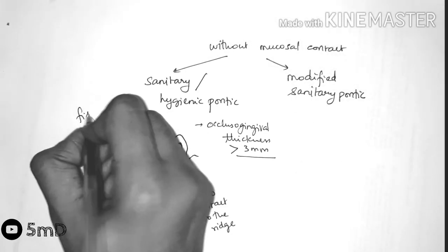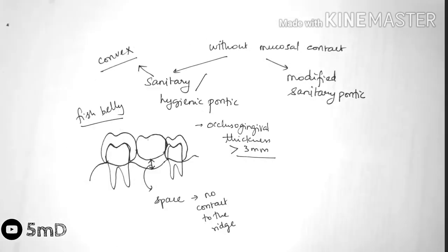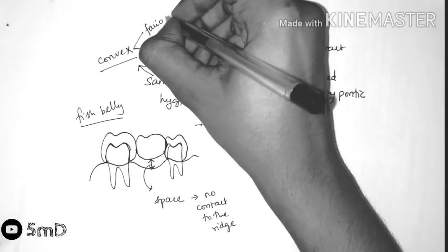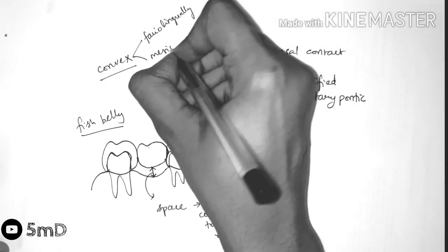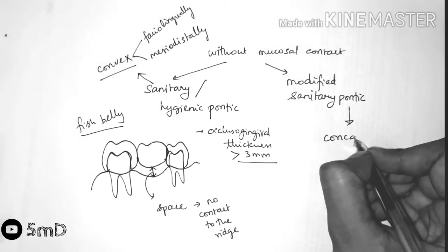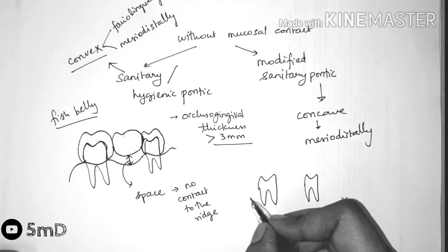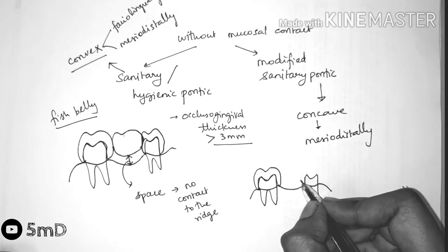The difference between the sanitary pontic and the modified sanitary pontic is that it is concave mesiodistally. Only the convexity is seen in the facial lingual direction. The concavity helps in more support at the connector region.